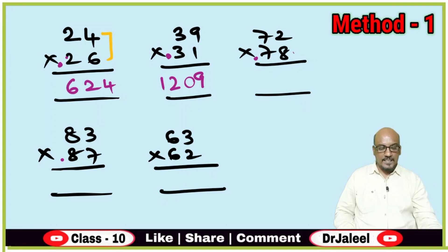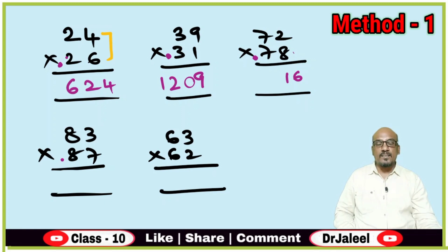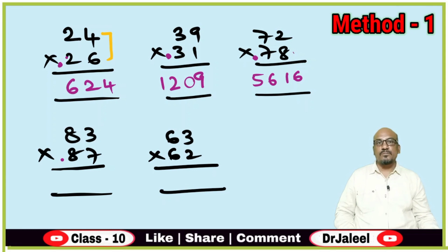Let us go for the next one. 8 twos — what is 8 twos? 16. Write 16 directly. Then for 7, you increase 1 to get 8. 8 sevens is 56. So the answer is 5616.